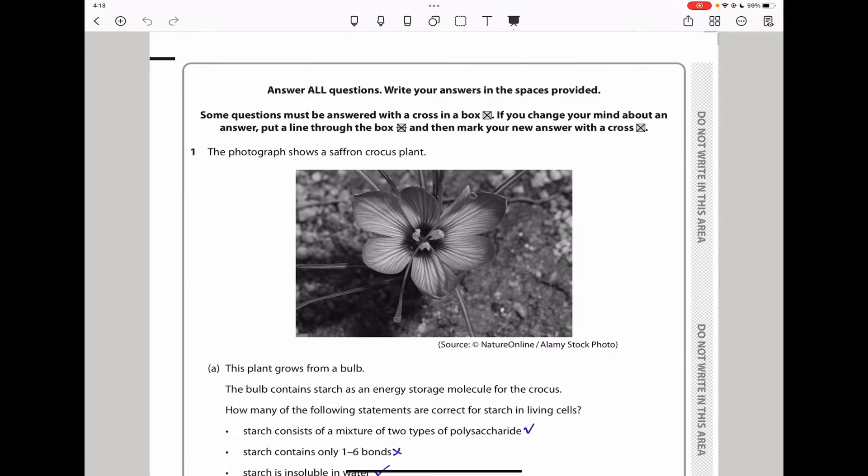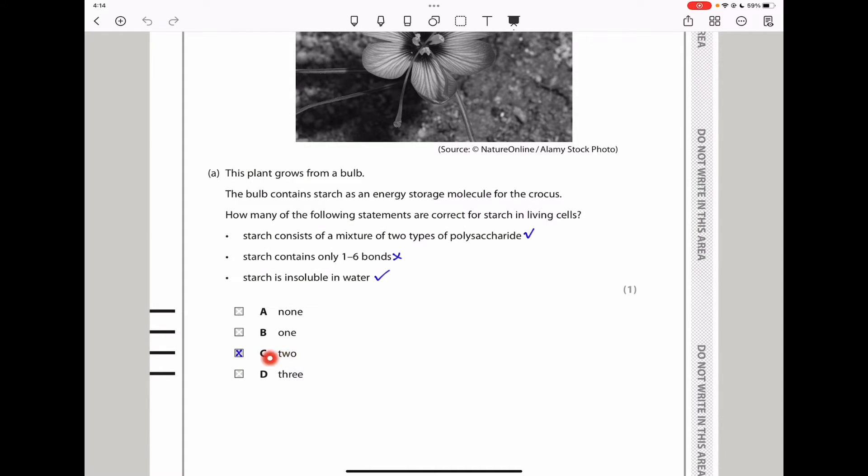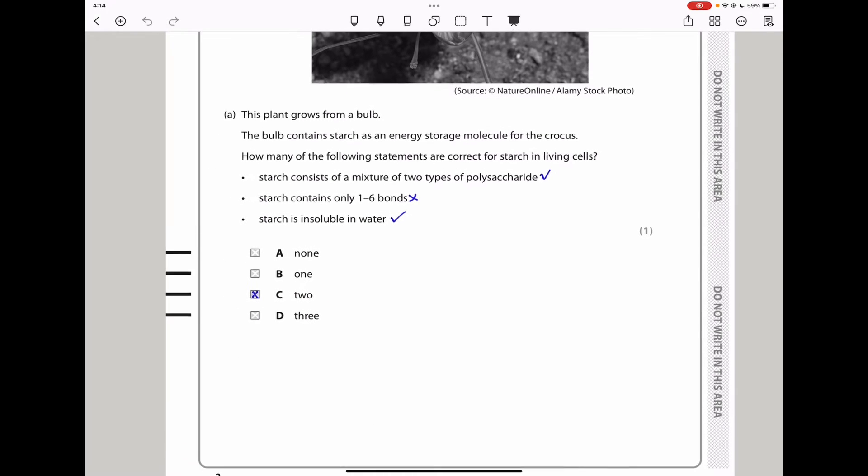Question one says the photograph shows a saffron crocus plant. This plant grows from a bulb. The bulb contains starch as an energy storage molecule for the crocus. How many of the following statements are correct for starch in living cells? Starch consists of a mixture of two types of polysaccharides - this is correct. Starch contains amylose as well as amylopectin. Starch contains only 1,6 bonds - this is wrong. Starch contains 1,4 as well as 1,6 glycosidic bonds. Starch is insoluble in water - this is correct.